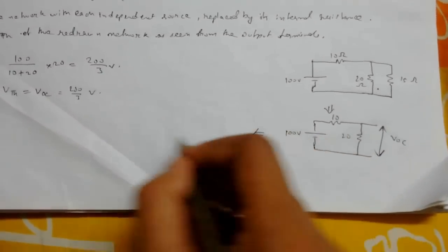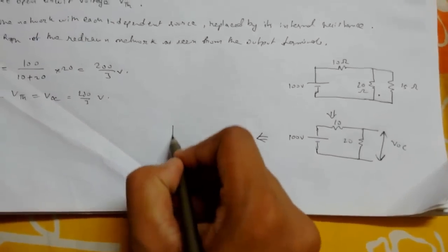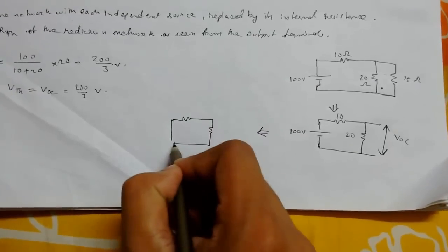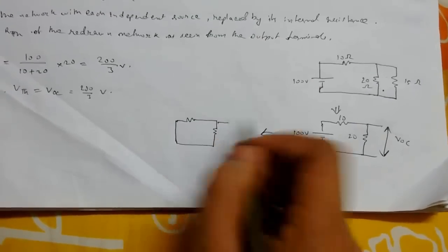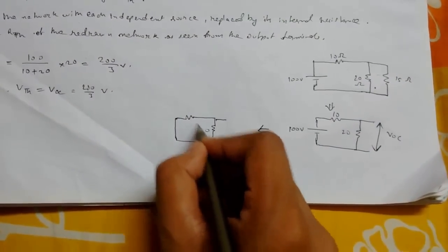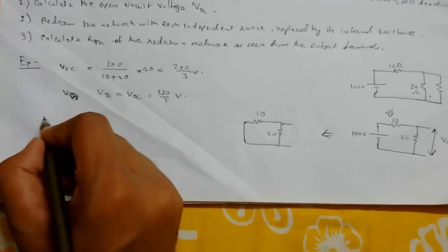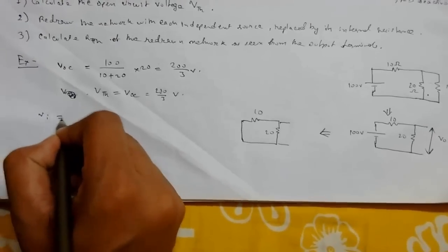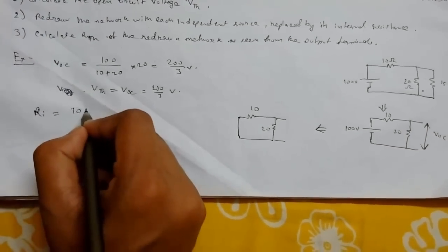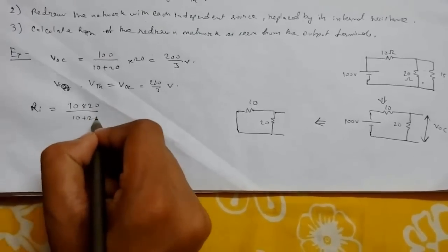Now we need to remove the source, so this will be short circuited. The internal resistance, that is Ri, will be 10 parallel 20. This is 10 into 20 upon (10 plus 20). This will be 20 upon 3 ohms.